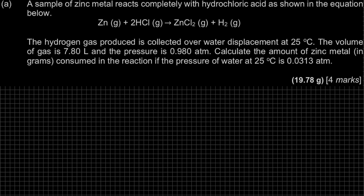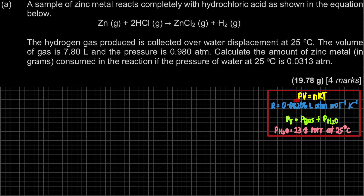The question asks to calculate the amount of zinc metal in grams, given that the pressure of water at 25°C is 0.0313 atm. So right now the question wants the mass of zinc. This is from Chapter 5, specifically 5.1 on gases. The formula you have to memorize is PV = nRT.